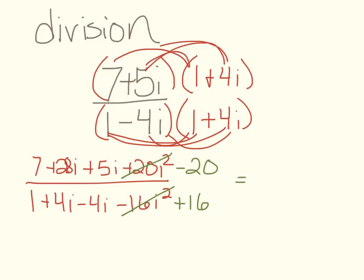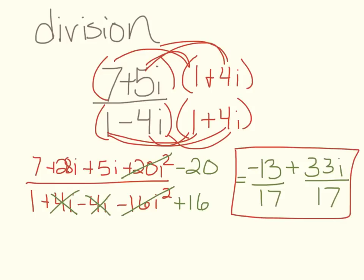So I have 7 minus 20, which is negative 13. And then I have 28i and 5i, which is 33i. And then on the bottom, these cancel out, and I have 1 plus 16 is 17. So I'm going to put each of these over 17. And the reason I'm doing that is so that I can follow the rule that says real plus imaginary. So I have negative 13/17 plus 33/17 i.